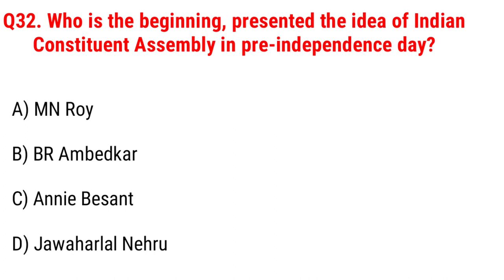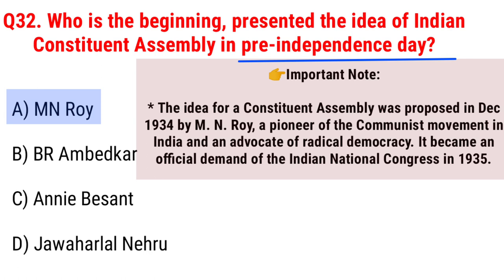Next question: who first presented the idea of the Indian Constituent Assembly in pre-independence days? Option A, M.N. Roy; B, B.R. Ambedkar; C, Annie Besant; D, Jawaharlal Nehru. The right answer is Option A, M.N. Roy. Important note: the idea for a Constituent Assembly was proposed in December 1934 by M.N. Roy, a pioneer of the communist movement in India and an advocate for radical democracy. It became an official demand of the Indian National Congress in 1935.